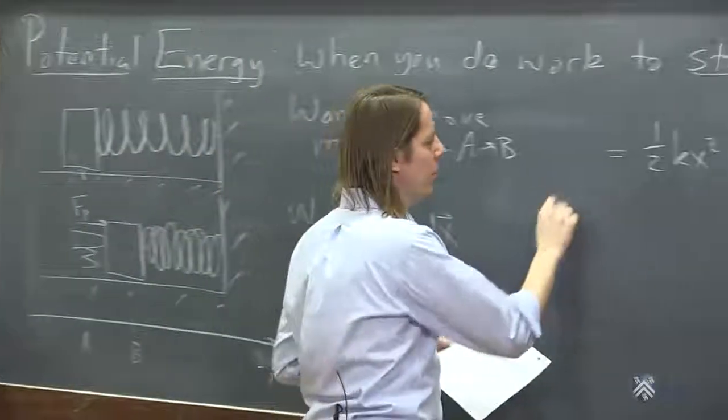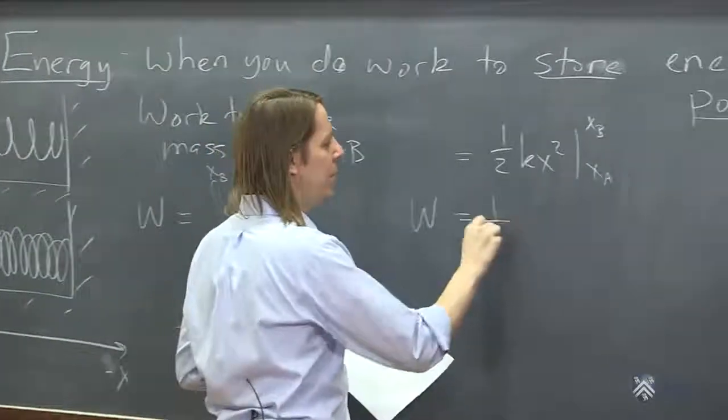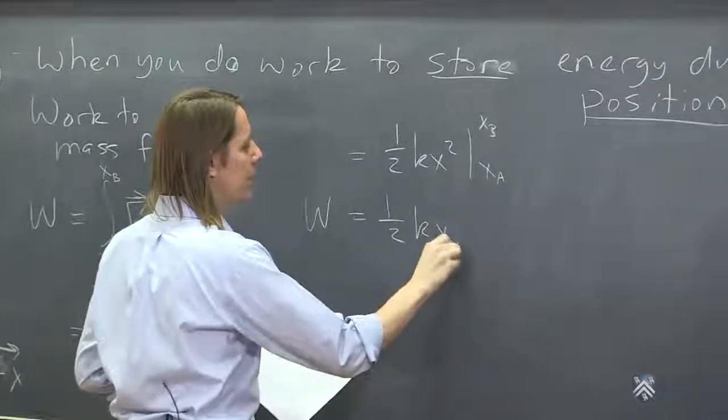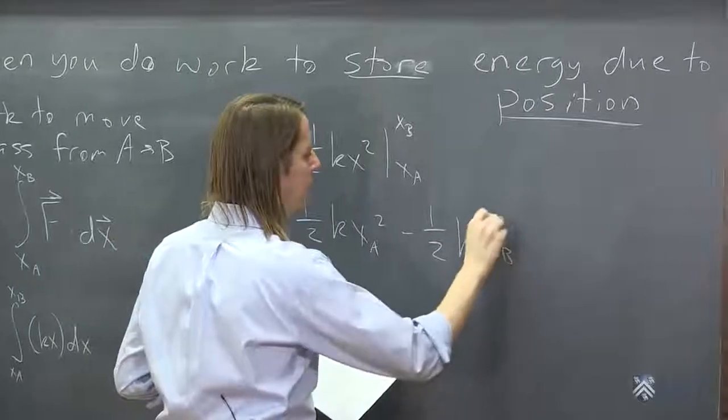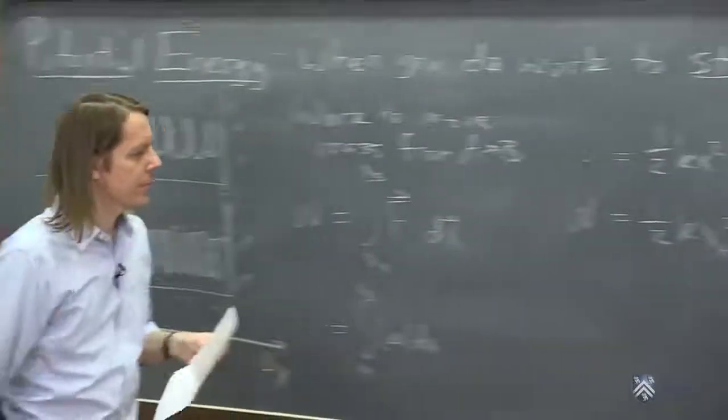And then we could say that the work, then, is 1/2 kx_A squared minus 1/2 kx_B squared.